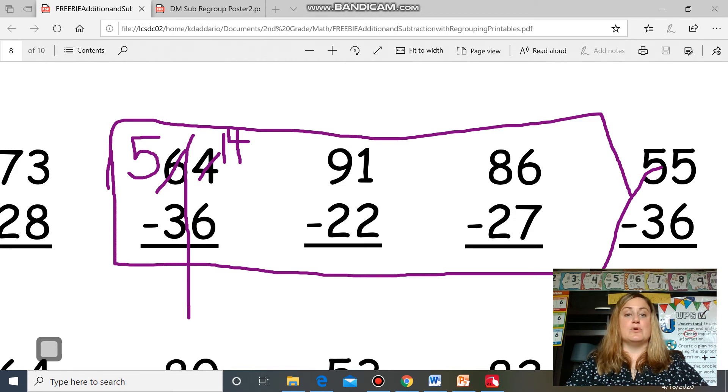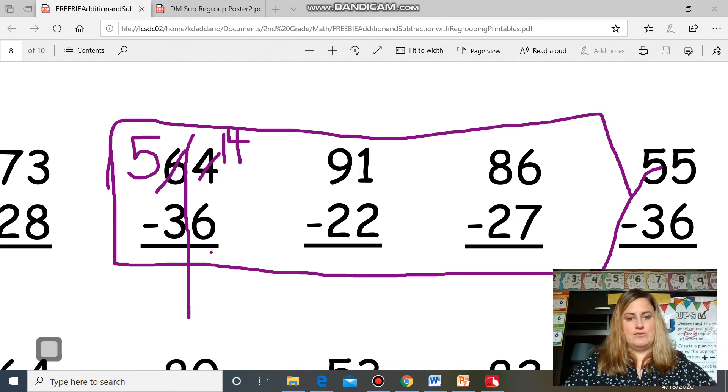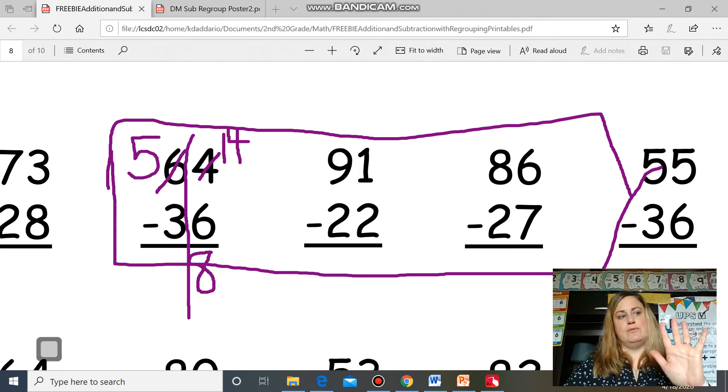Then I can subtract 14 minus six because 14 is a bigger number. I can take six away. So again, if I have to draw circles, please do. I am going to use my number line and I'm going to jump back. So I start at 14 and I jump back six. One, two, three, four, five, six, and eight is my answer. So I'll put eight and then I go to the tens place. Five, take away three. One, two, three. I have two left. My answer is 28.